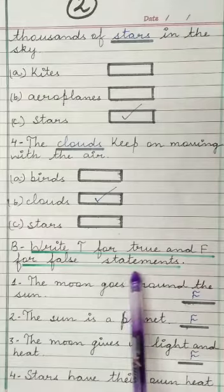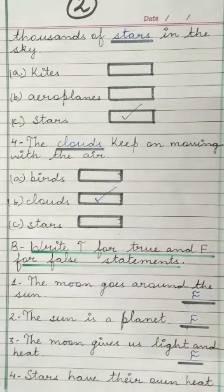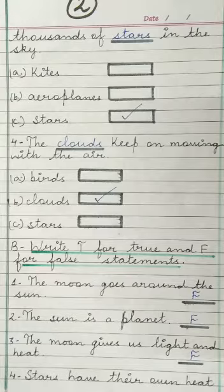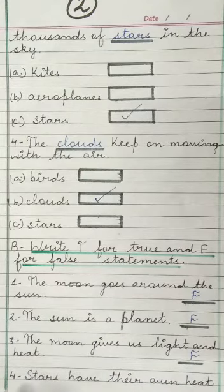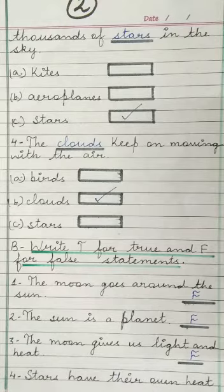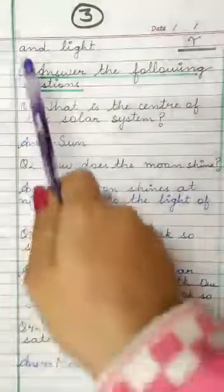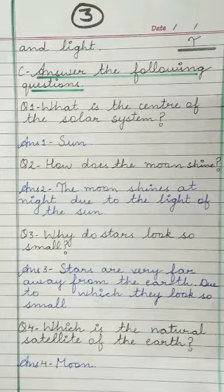Next, we have to write T for true and F for false. First: the moon goes around the sun — this is False. Next: the sun is a planet — this is also False. Next: the moon gives us light and heat — this is False. Next: stars have their own heat and light — so this is True.